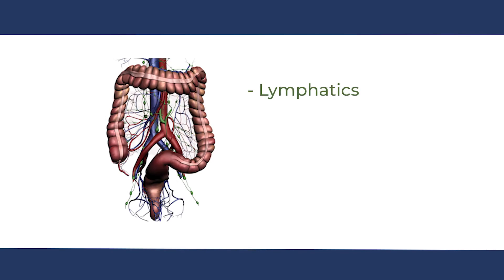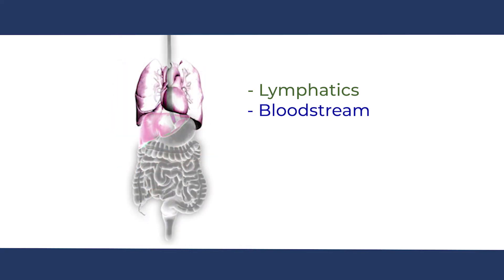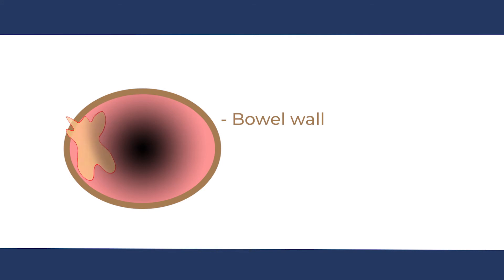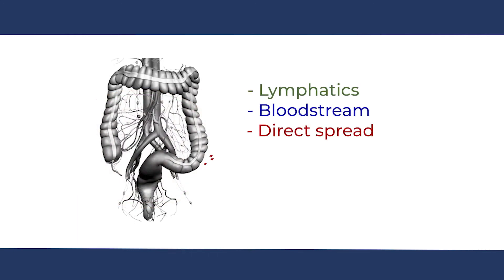Cancers or tumours within the abdominal cavity can spread or metastasise in three ways. Metastasis refers to the process whereby cancer cells break free and travel and invade other parts of the body. One route is via the blood vessels to other organs such as the liver or the lungs. Another is when cancers such as bowel cancer grow through the bowel wall and these cancer cells then spill and disseminate directly into the abdominal cavity, attaching themselves to the peritoneum and adjacent organs.